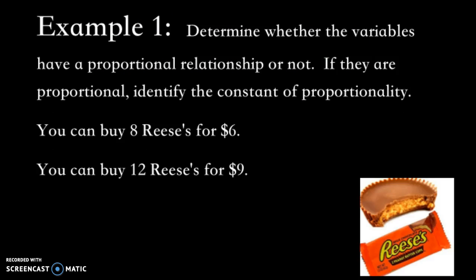The first one is this. You want to figure out, do these variables have a proportional relationship or not? If they are proportional, identify the constant of proportionality. So you can buy eight Reese's for $6 or you can buy 12 Reese's for $9.